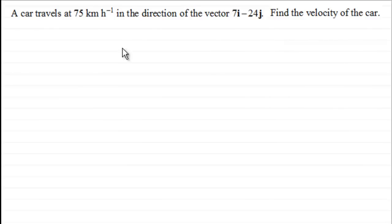So what we've got here is a car travels at 75 kilometers per hour in the direction of the vector 7i minus 24j, and what we've got to do is find the velocity of the car.